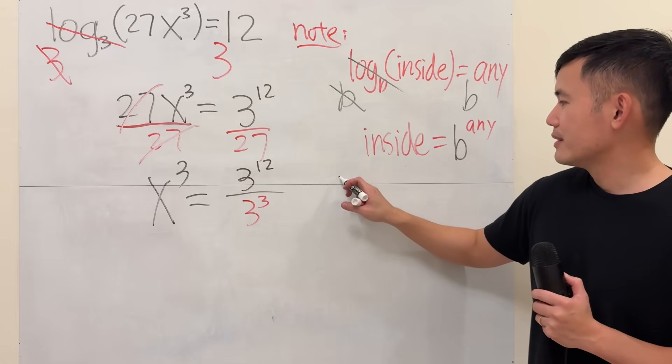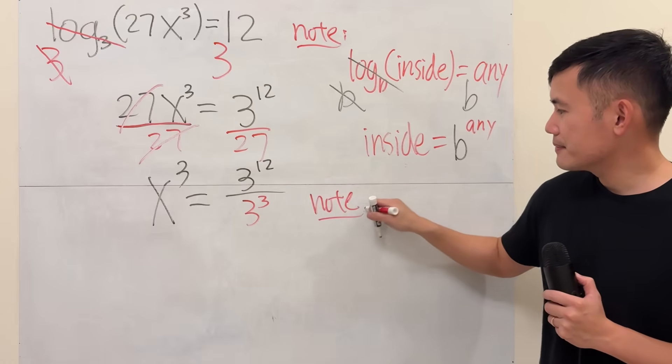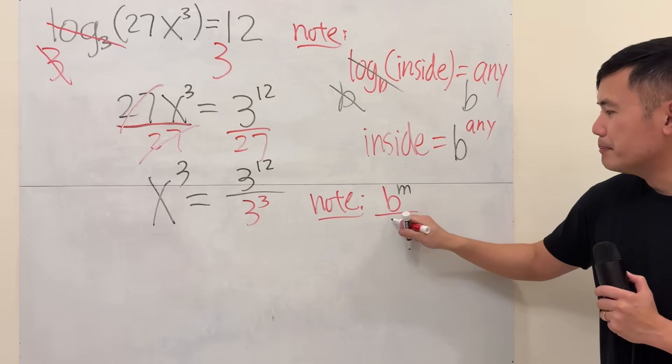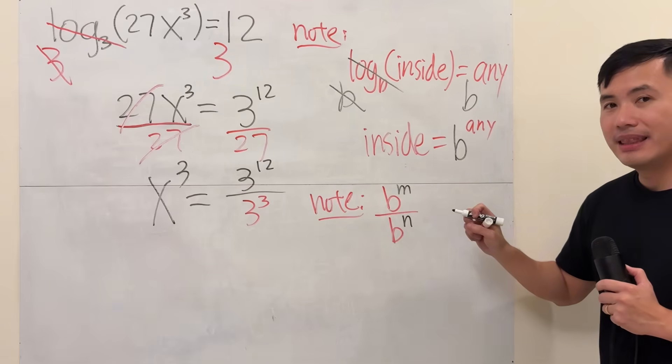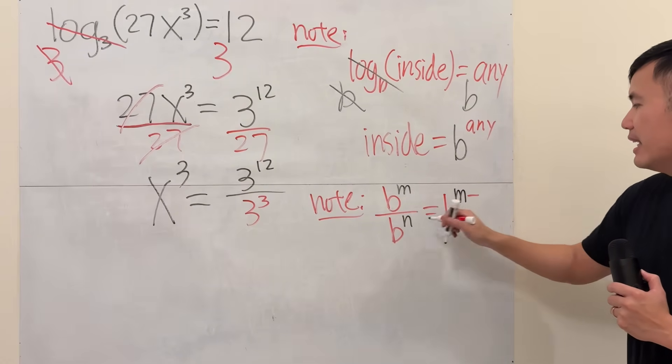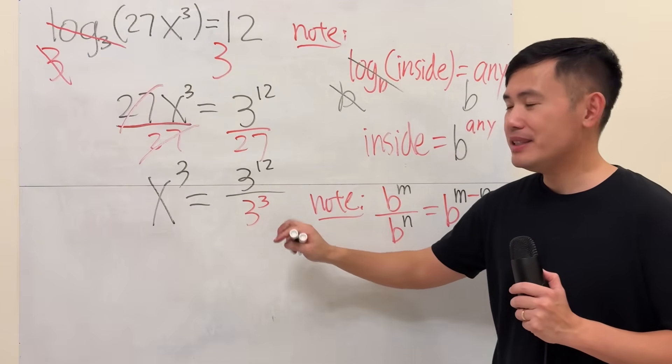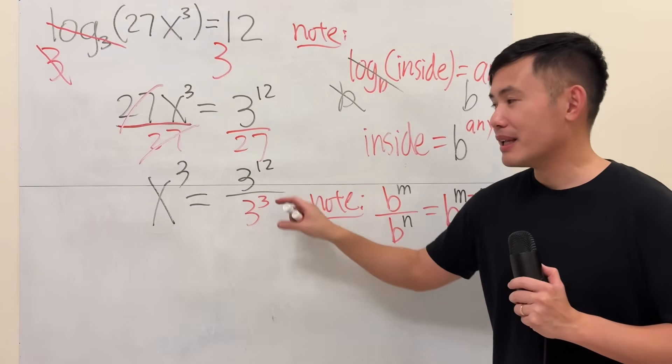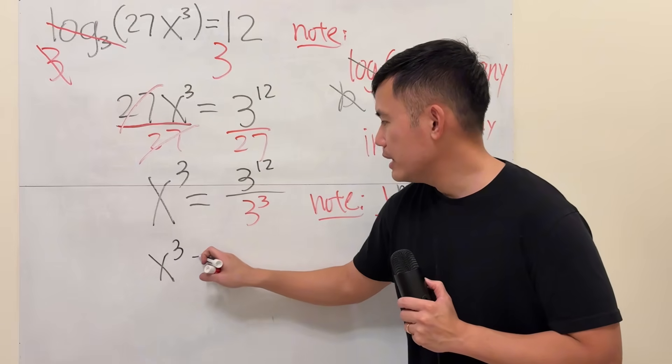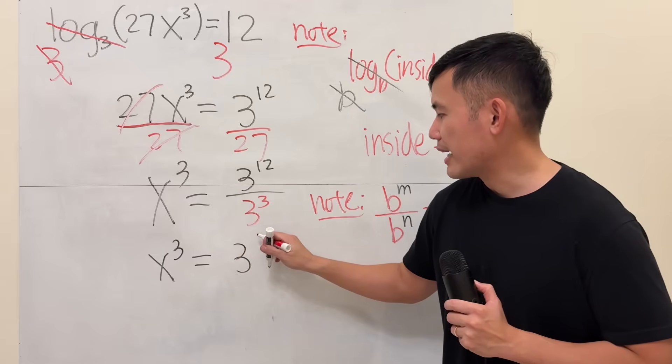Another note, when we have b to the m divided by b to the n, this is equal to b raised to the m minus n power. So let's utilize that. You see, you do not have to work this out. But you have to do this. Anyways, we get x to the 3rd power equals 12 minus 3 is 9, so that's 3 to the 9th power.